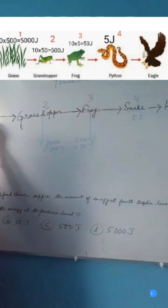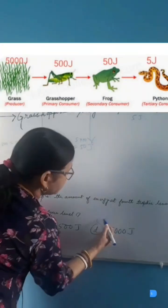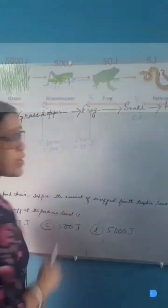Again, the 1st trophic level will have 10 into 500 Joules, which will be 5000 Joules. So, option D which is 5000 Joules will be the correct answer.